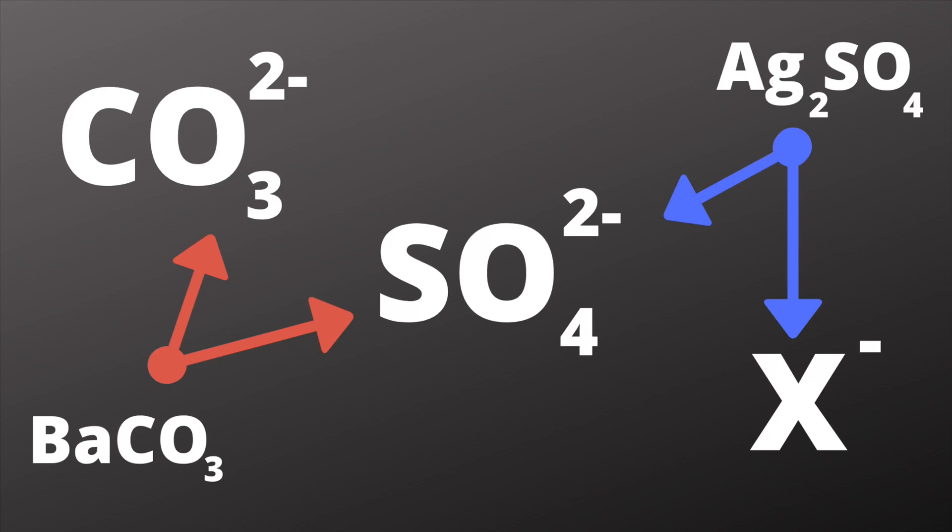Another similar example that you need to know for the OCR-A specification is that sulfate ions will actually produce a precipitate with silver ions. The precipitate has the formula Ag2SO4, and those silver ions are the ones that are used in the halide ion test.